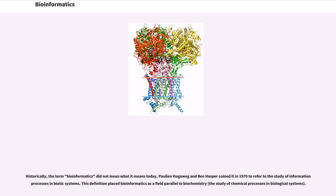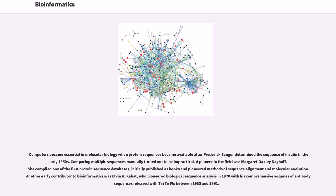Historically, the term bioinformatics did not mean what it means today. Pauline Hogeweg and Ben Hesper coined it in 1970 to refer to the study of information processes in biotic systems. This definition placed bioinformatics as a field parallel to biochemistry, the study of chemical processes in biological systems. Computers became essential in molecular biology when protein sequences became available after Frederick Sanger determined the sequence of insulin in the early 1950s. Comparing multiple sequences manually turned out to be impractical.